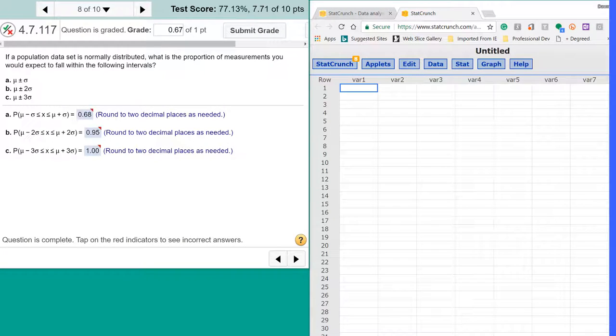Hi, this is Dr. Don. I have a problem out of Chapter 4, Section 7, and this has to do with the normal distribution. It says that if a population data is normally distributed, what is the portion of measurements you would expect to fall within the following intervals?